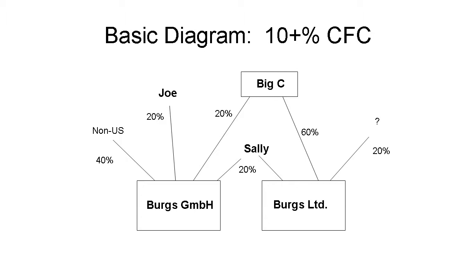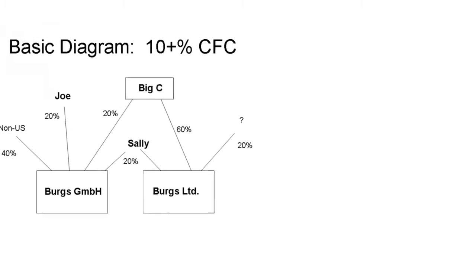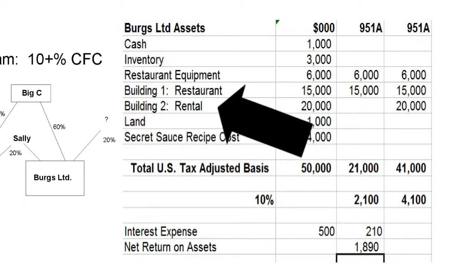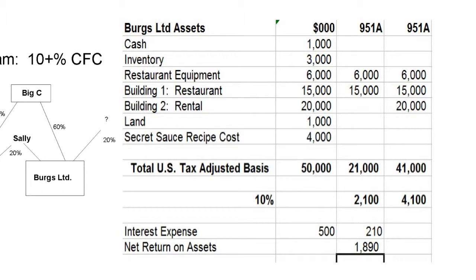Let's look at the assets for our example company, Bergs Limited. Some assets clearly qualify, and some clearly don't. Bergs runs a hamburger business — the restaurant building and equipment qualify. The cash, inventory, land, and intangibles don't. The big open question is that rental building. What's the level of activity Bergs Limited has with respect to the building? If it's a triple net lease, the rental building does not qualify as a business — probably a bad thing — and the income should be treated as subpart F passive basket income. If Bergs provides maintenance and other services related to the building, then the building probably qualifies for the 10% amount. This question of whether rental activities qualify as a trade or business has been relevant in subpart F since 1962, and it's now also very relevant for 951A.